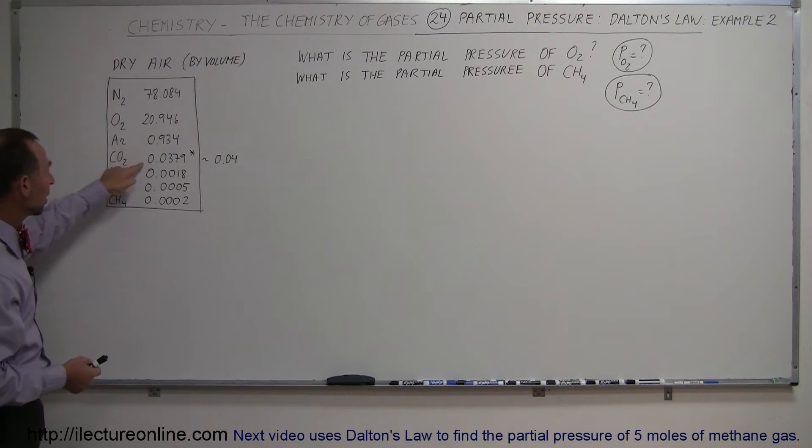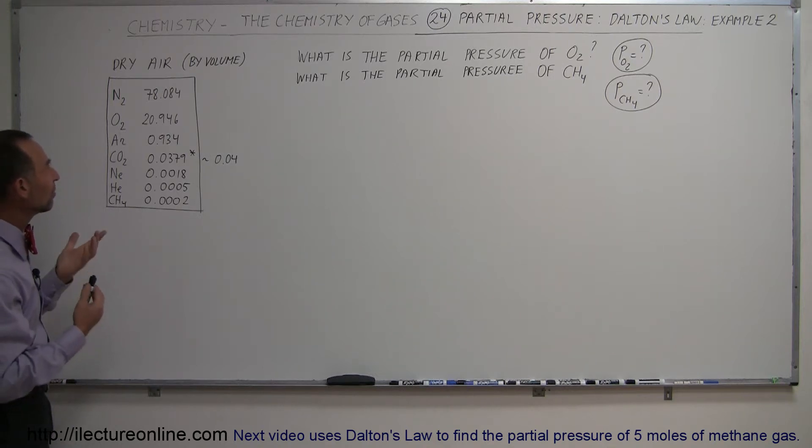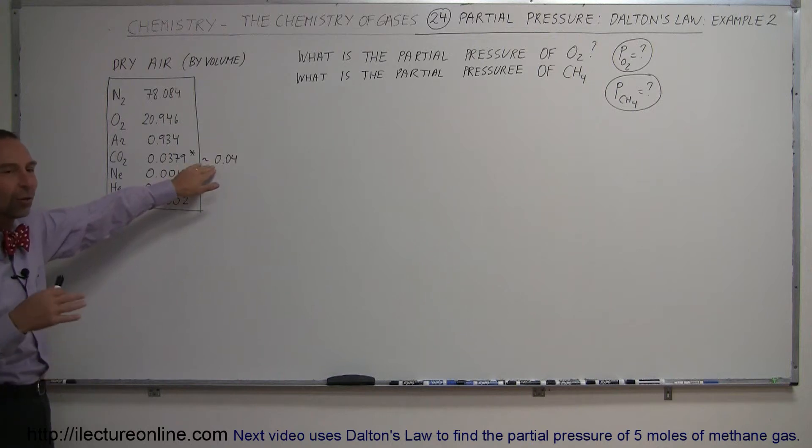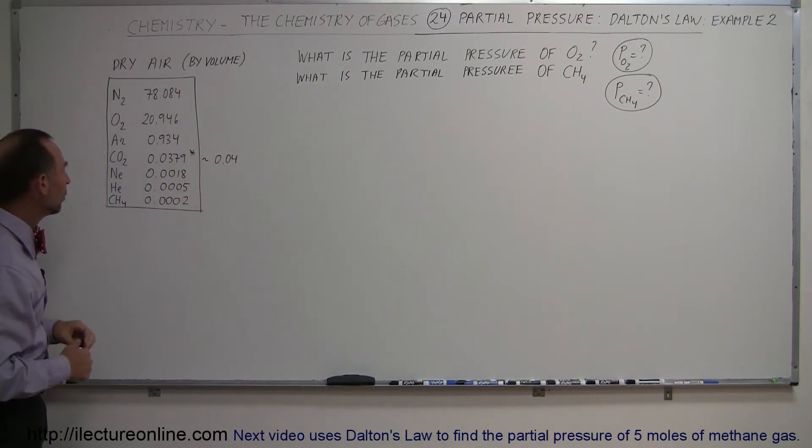After that, we have carbon dioxide. Notice that here it was listed as 0.0379. This is a percent of the total. Of course, carbon dioxide is slowly creeping up, and it's now reaching the 0.04% range of the volume of the constituent in the air. We have neon, helium, and then at the end here we have methane.